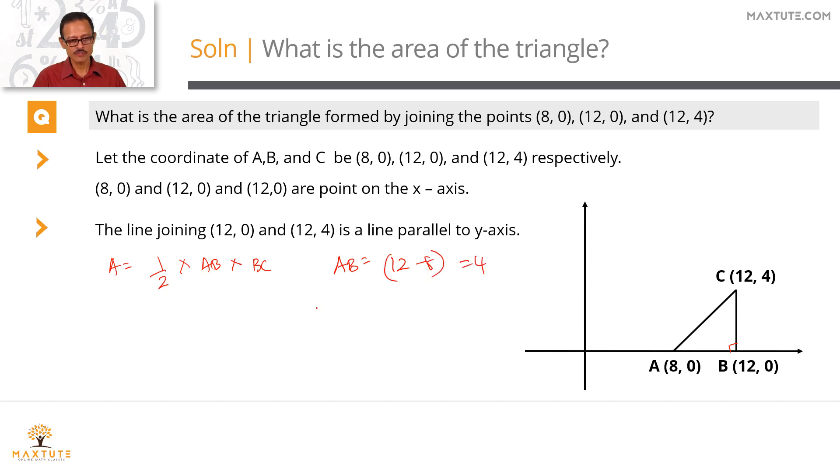What is the measure of BC? The x coordinate remains the same for both these points. So to find the length of BC, all we need to do is find the difference in the y direction. So BC is equal to 4 minus 0, which equals 4.